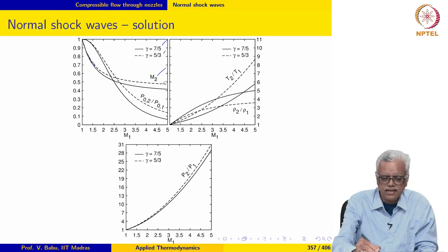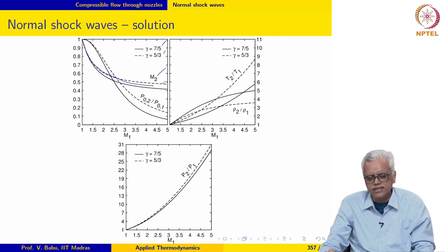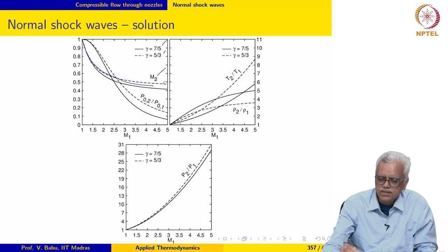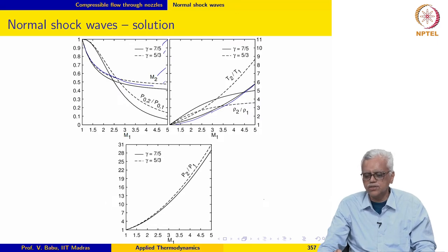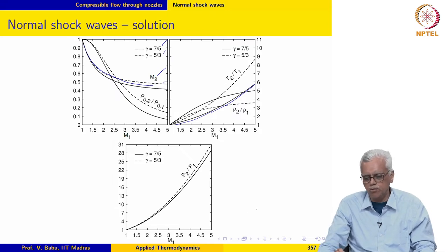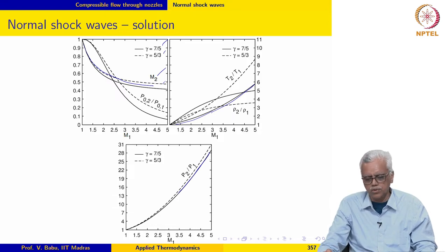The general trend is that the downstream Mach number M2 decreases with increasing M1. The static temperature increases with increasing Mach number and does not seem to be asymptoting to a constant value — it continuously and monotonically increases with M1. The same is true for P2 over P1: the pressure after the shock continues to increase with Mach number.